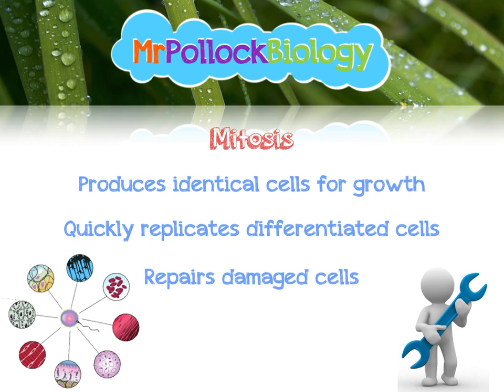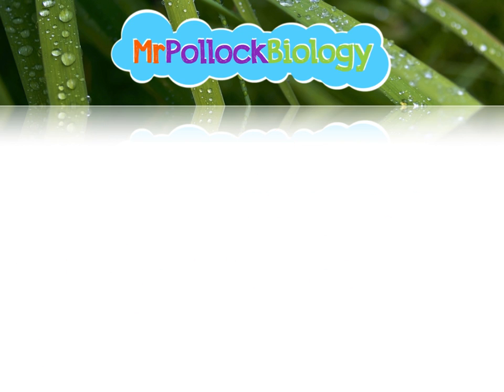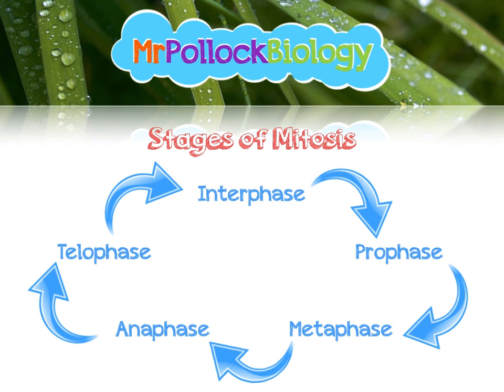Now we know why mitosis is important, we can look at the five main stages of mitosis. They are: interphase, prophase, metaphase, anaphase, and telophase. Interphase is where we usually start, and this is by far the longest stage of mitosis. Most cells will be in this phase for the majority of their life cycle, and then the other stages are really tiny amounts of the division part. You need to know exactly what goes on at each of these stages.